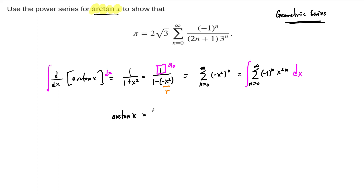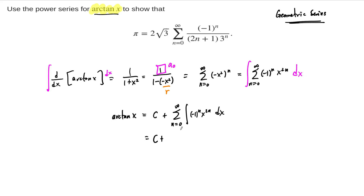The arctangent of x is equal to the integral. When we integrate a power series, we always add an unknown constant C in front of the entire series. Then the rest of the series equals the sum of the antiderivatives of the terms, computed term by term. So our power series representation for arctangent is C plus the sum, with antiderivatives giving us negative 1 to the n over 2n plus 1, times x to the 2n plus 1.